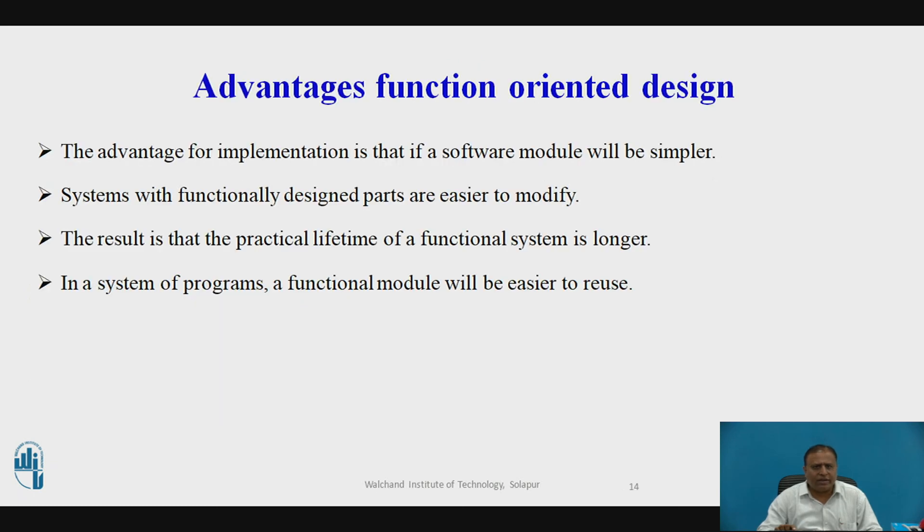Now, we are going to see advantages of function oriented design. The advantage for implementation is that if a software module has a single purpose, it will be simpler and therefore easier and less expensive to design and implement. Systems with functionally designed parts are easier to modify because each part does only what it claims to do. Since maintenance is more than three-fourths of a successful system's life, this feature is a crucial advantage. It makes the system easier to understand and document, which simplifies training. The result is that the practical lifetime of a functional system is longer. In a system of programs, a functional module will be easier to reuse because it is less likely to have side effects that appear in other parts of the system.